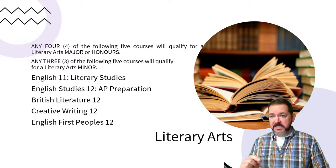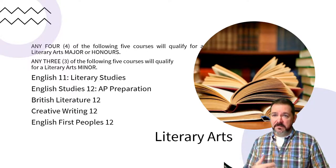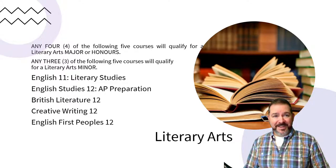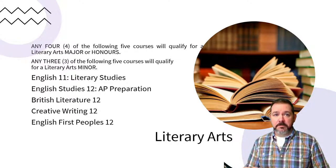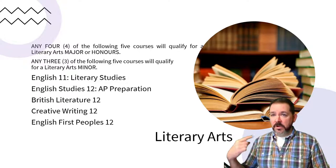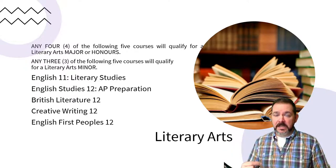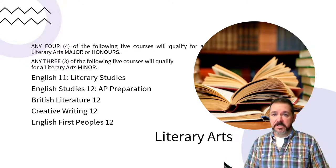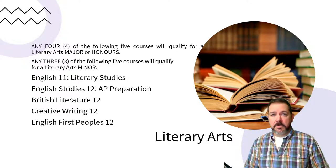For English, you would take four of the following courses to get a major or honors, or three to get a minor: English Literary Studies (an advanced English class), English 12 AP Prep (the advanced grade 12 class), Brit Lit (an elective), Creative Writing (an elective), and First Peoples 12 — either as an elective alongside or in place of the English classes. Talk to Ms. Richard Young, Ms. Hughes, Ms. Rusko, or Mr. Harris for guidance.